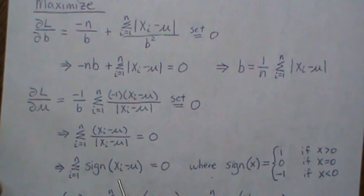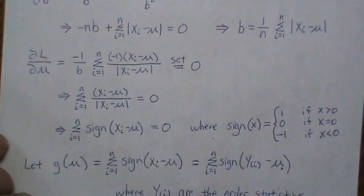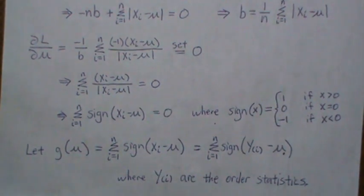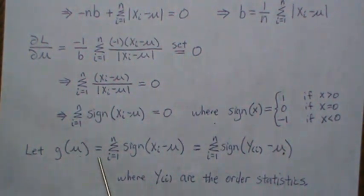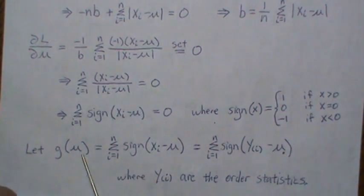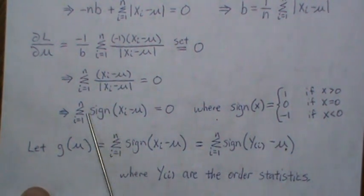Now how do we solve this for mu when it's 0? That's what we're going to do on the next page. But before we start, let's let this be g of mu. This is a function that we want to solve for mu, find the root, meaning where it equals 0, which is this piece.